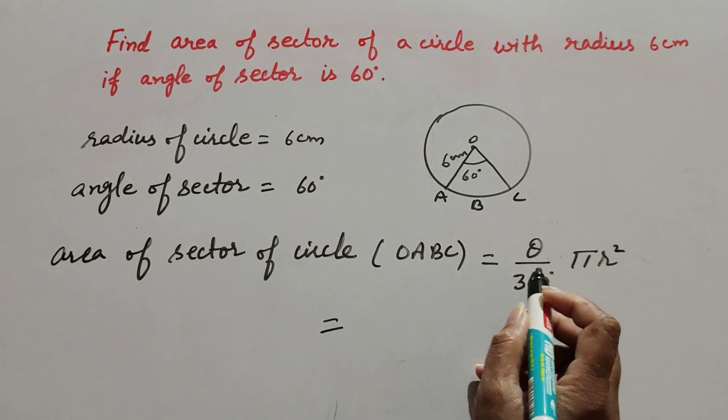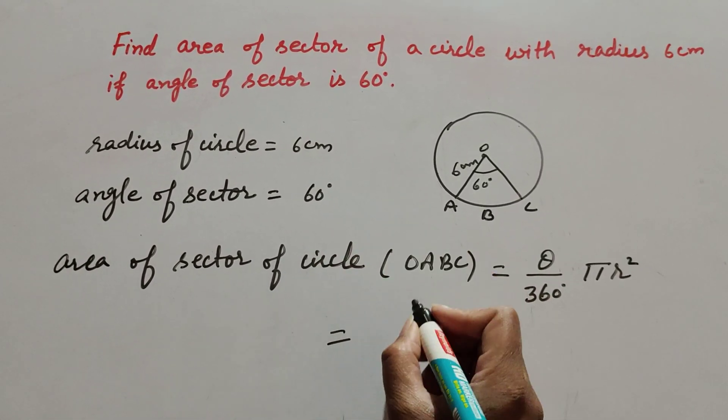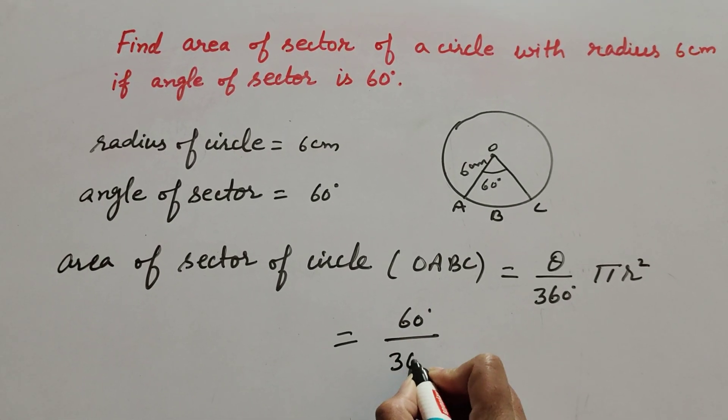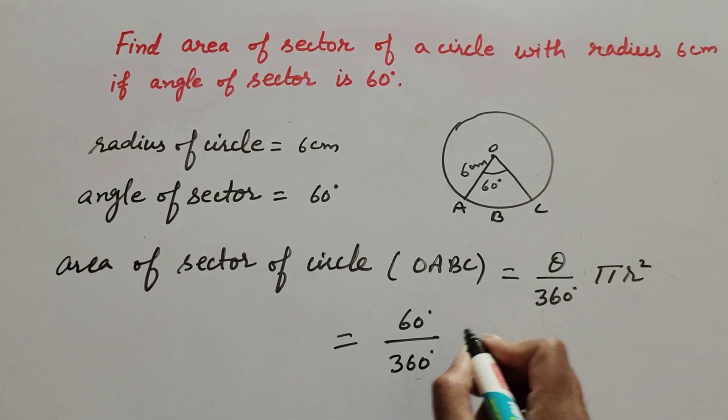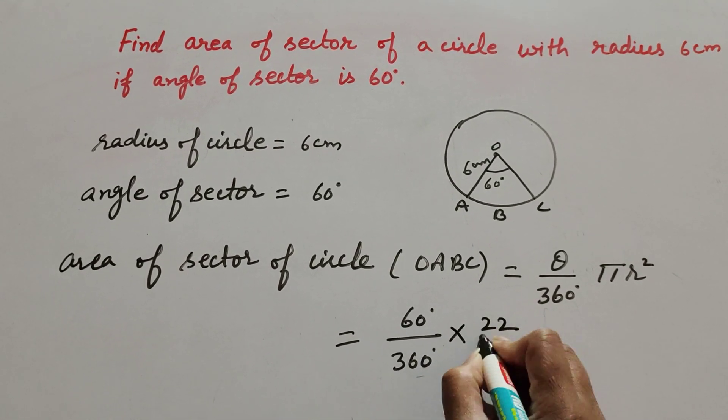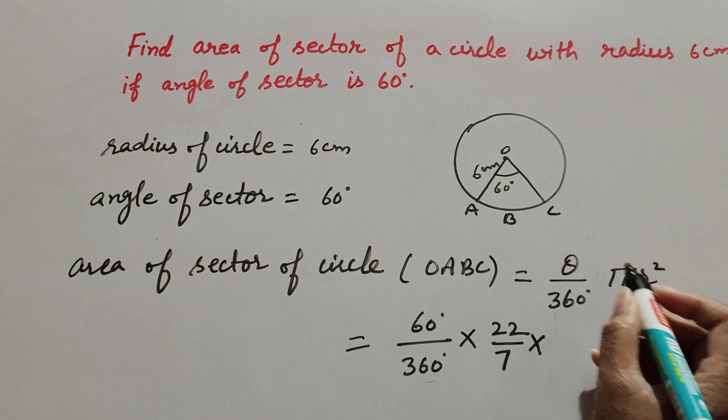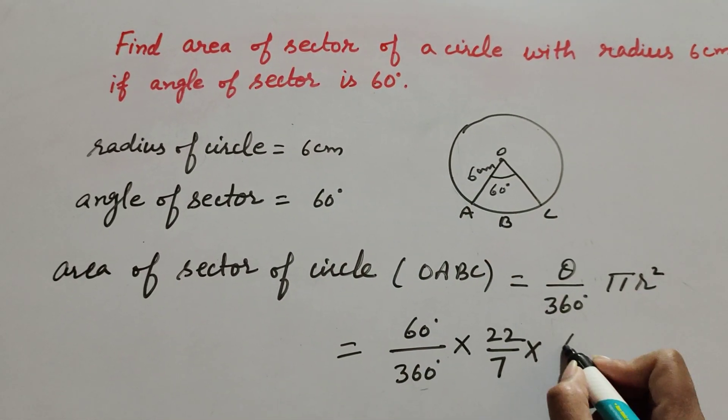It is equal to theta, the angle of sector which is given 60 degrees, over 360 degrees into pi, which is 22 over 7, into r square. R is the radius of circle, it is 6 cm, so 6 square.